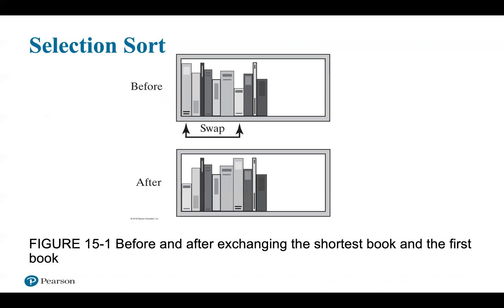Now let's get into selection sort. Imagine you want to rearrange books on your bookshelf by height, with the shortest book on the left. You might begin by tossing all the books on the floor and returning them one at a time in order. Instead, approach your intact bookshelf and select the shortest book. Since you want it first on the shelf, you swap it with the first book — the shortest book trades places with the first book, as Figure 15-1 shows.